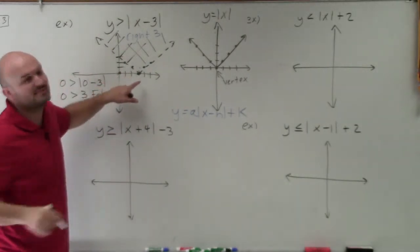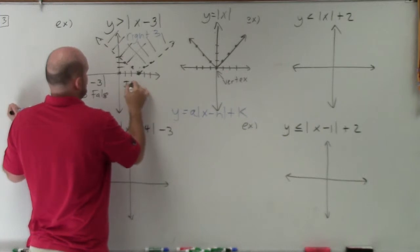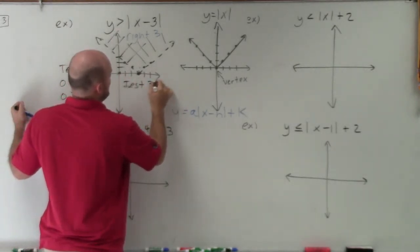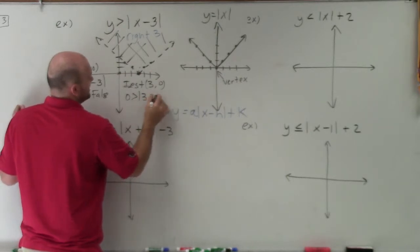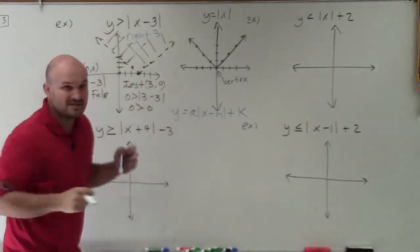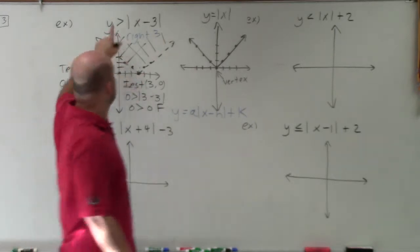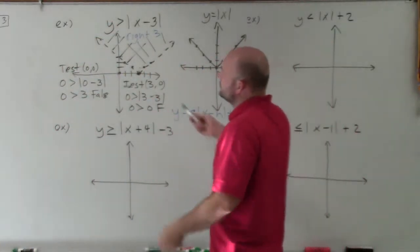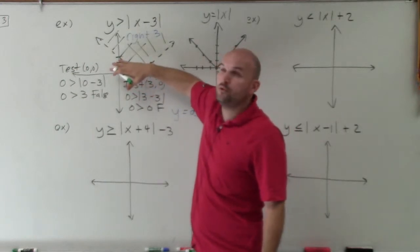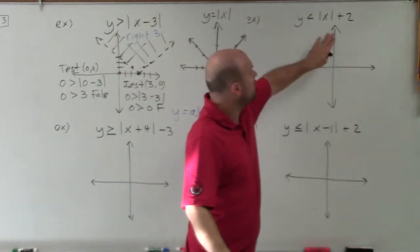Let me also show that the boundary line itself is false. Testing the point (3, 0) — which is on the boundary line — I get: 0 is greater than absolute value of 3 minus 3, which is absolute value of 0, which is 0. So 0 is greater than 0 — that's false, since 0 equals 0. Therefore that boundary line is dashed. Also notice: since y is isolated on the left side, when y is greater than, it's all the y-values above the line. If it were less than, it would be all the y-values below the line.